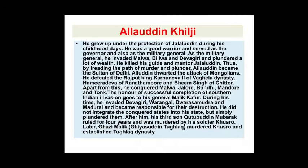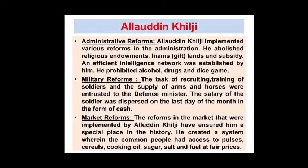Qutubdin Mubarak ruled for four years and was murdered by his soldier Khusrau. Later, Ghazi Malik, also known as Ghiyasuddin Tughlaq, murdered Khusrau and established the Tughlaq Dynasty. In Alauddin Khilji's administrative reforms, he implemented various reforms. He abolished religious endowments, land grants, and subsidies, and established an efficient intelligence network.